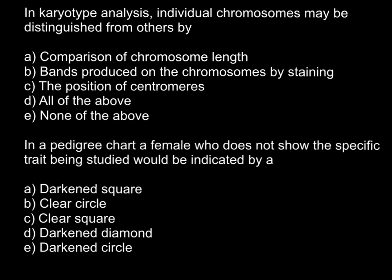Here is the first question: In karyotype analysis, individual chromosomes may be distinguished from the others by — and here are five answers.